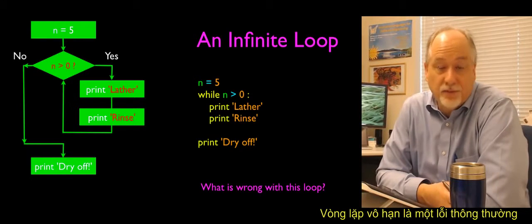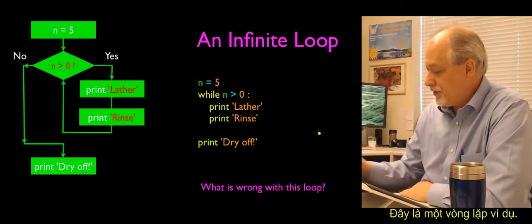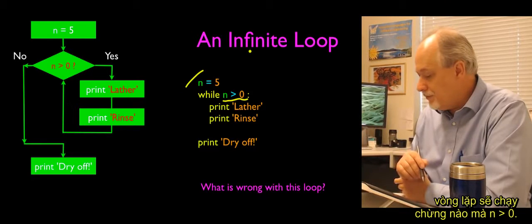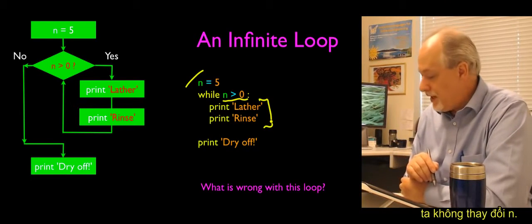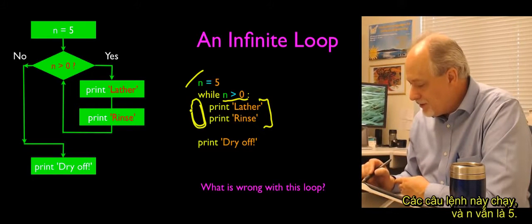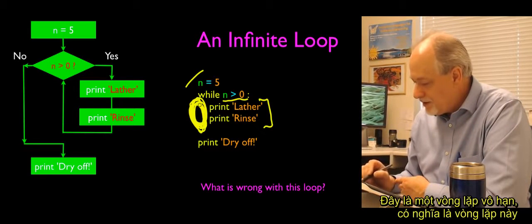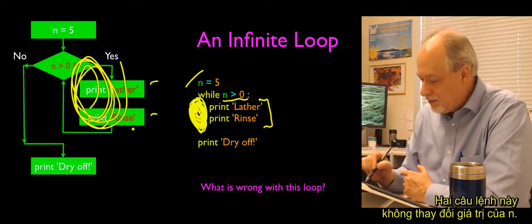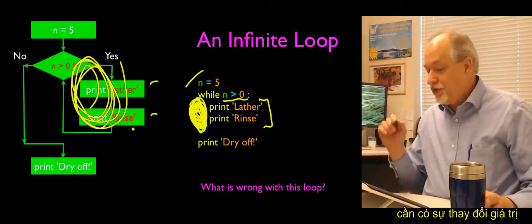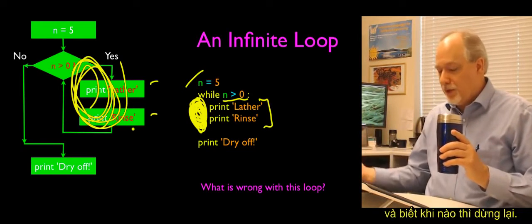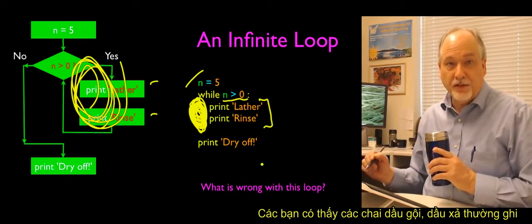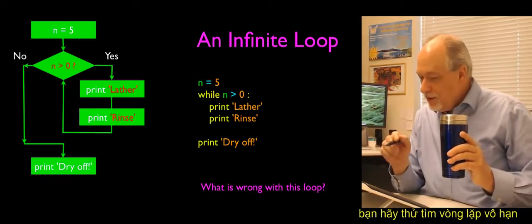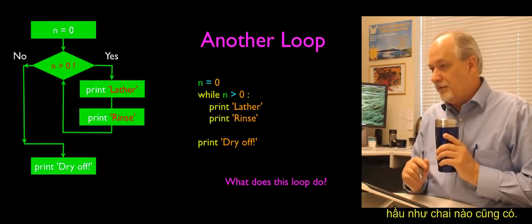A common problem to avoid is an infinite loop. Here's a carefully constructed loop: n starts at 5, and we have while n greater than 0. But the problem is we don't change n inside the block — which means it's going to come back, n is going to be 5, run this, be 5, run this, be 5. This loop will never exit because n's not changing. Part of the iteration variable concept is that something must change so the loop makes progress and knows when to stop. And of course, 'lather, rinse, repeat' on shampoo is a classic infinite loop.